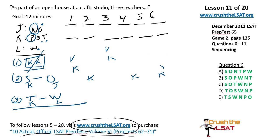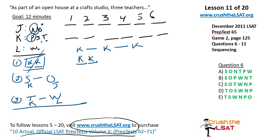Here's a new way to diagram this rule. Instead of showing strict ordering, since the K's must be at least one slot apart, we write it as: K … [gap] … K … [gap] … K — using dots to indicate there must be at least one space between each K, perhaps more than one. This notation — K-dot-dot-dot-K-dot-dot-dot-K — is a useful way to represent separation constraints. You'll see this kind of notation again in future games.